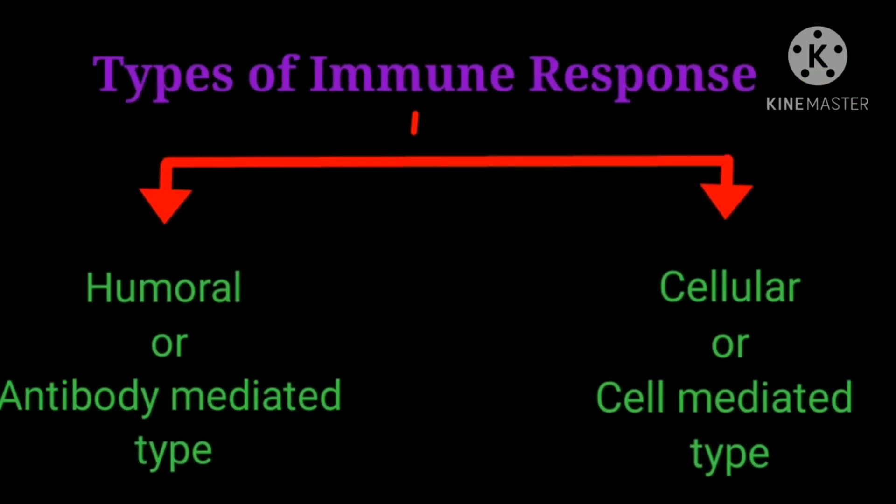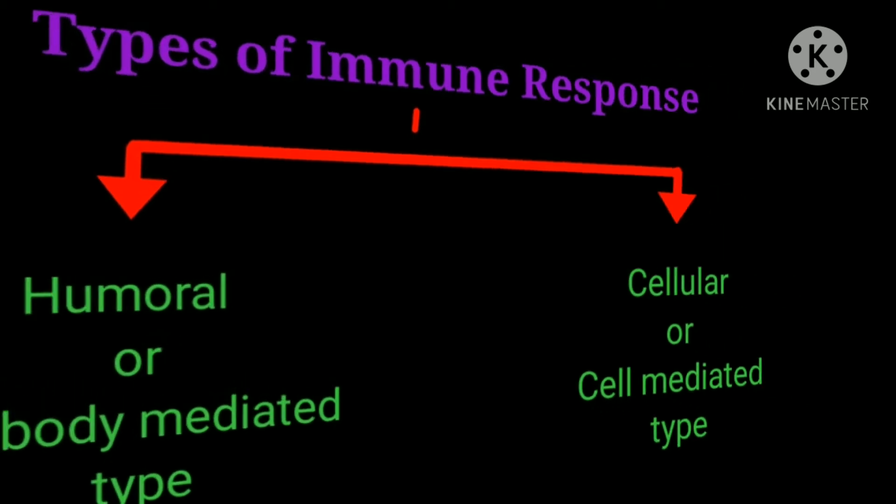Types of immune response. The immune response can be of two types: humoral or antibody-mediated type, and cellular or cell-mediated type. The two are usually developed together, though at times one or the other type may be the predominant or exclusive type.